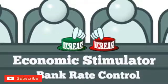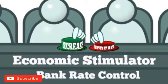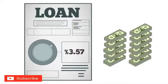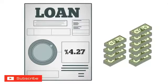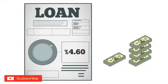When policymakers fear that the economy may be growing too rapidly, increasing the risk of inflation, they may raise the bank rate. Raising the bank rate makes loans more expensive. This shrinks the money supply and reduces spending, which in turn dampens the risk of inflation.